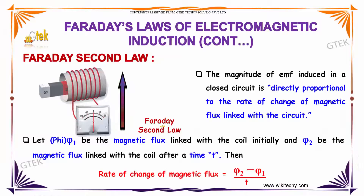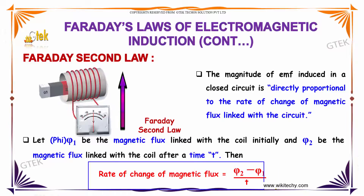Now we will talk about Faraday's second law. The magnitude of EMF induced in a closed circuit is directly proportional to the rate of change of magnetic flux linked with the circuit. Let π₁ be the magnetic flux linked to the coil initially and π₂ be the magnetic flux linked to the coil after time t. Then the rate of change of magnetic flux is given by (π₂ − π₁) divided by t.